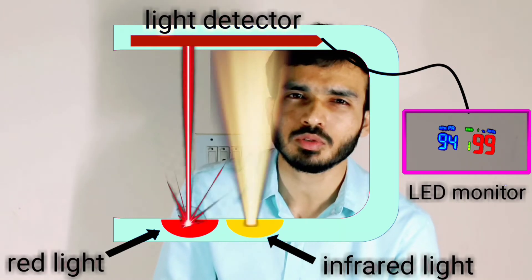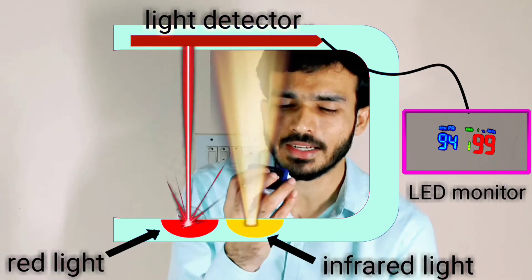The oximeter — the pulse oximeter specifically — detects or measures two values: one is your pulse rate, and the other one is your oxygen saturation levels, that is the blood saturation levels.